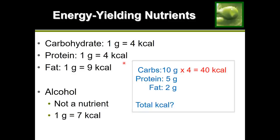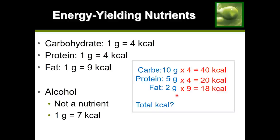For protein: each gram provides 4 calories, and we have 5 grams — so 5 × 4 = 20 calories of protein. For fat: each gram provides 9 calories, and we have 2 grams — so 2 × 9 = 18 calories of fat. Adding them up: 40 + 20 + 18 = 78 total calories for this food product.